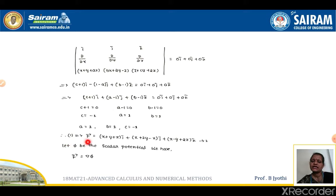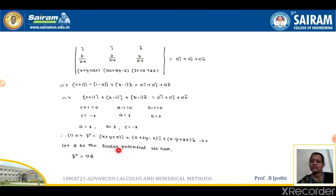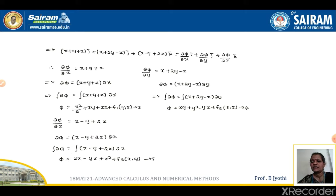Therefore, substituting the values of a, b, c into equation 1, we get f = (x + y + z)i + (x + 2y − z)j + (x − y + 2z)k. Let phi be the scalar potential; we have f = del phi, and we need to find phi from this expression.